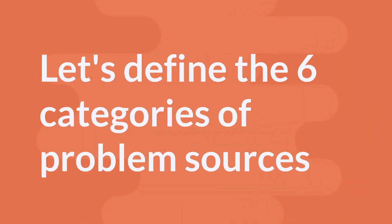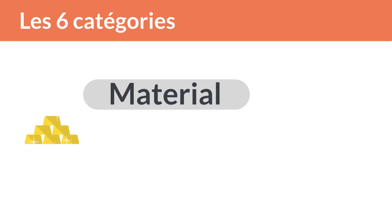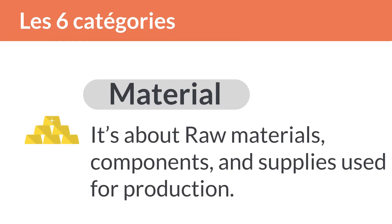Now let's define the six categories of problem sources. Material is about raw materials, components, and supplies used for production, as well as general materials used for business operation.